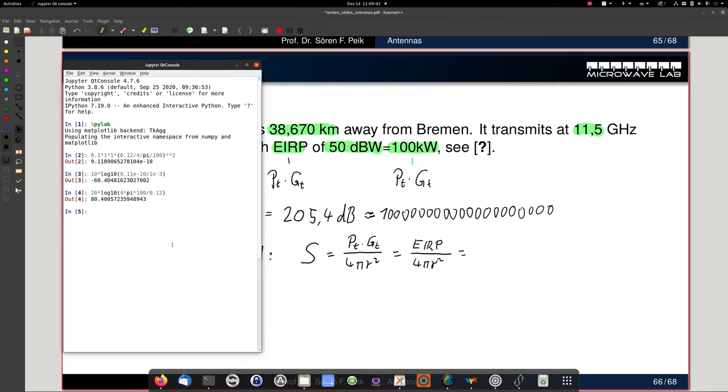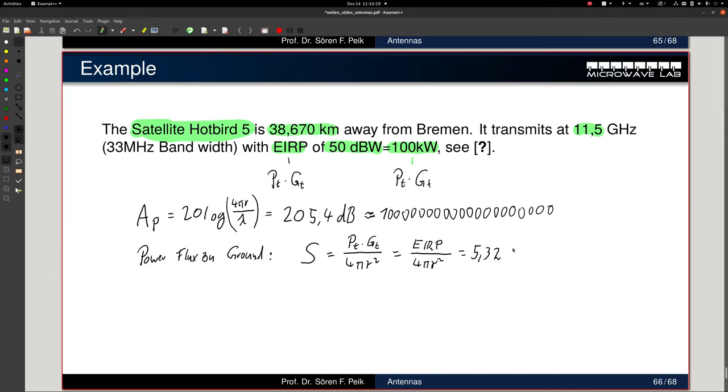Let's do that here because we can do it, which is Pt is 100 kilowatts. It's Eirp. The Eirp is 100 kilowatts divided by 4, divided by pi, divided by r square. And r is 3, 8, 6, 7, 0, e to the 3 because it's kilometers and it's squared times 2. So this is 5.32, 10 to the minus 12. 5.32, 10 to the minus 12 is pico. So it's pico watts per meter square. So we have an extremely small power flux density on the ground. And now let's see how much area do we need in order to receive the signal.